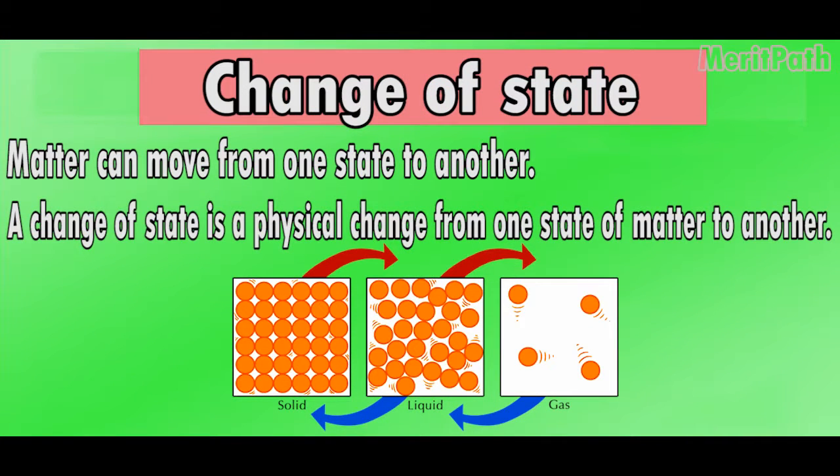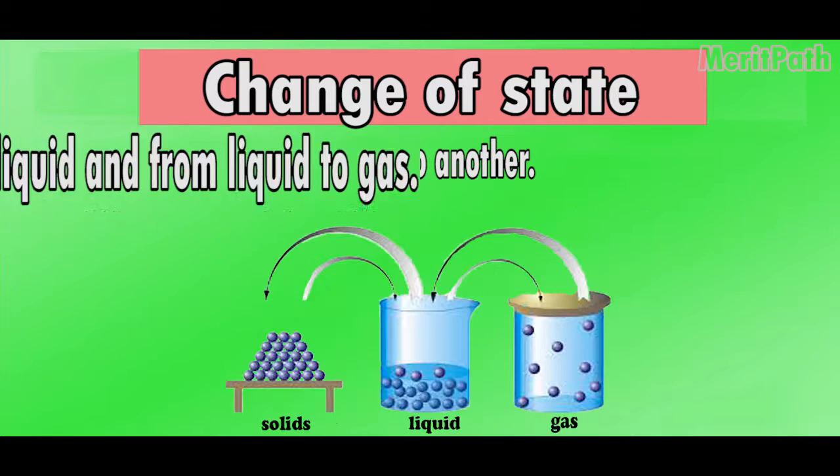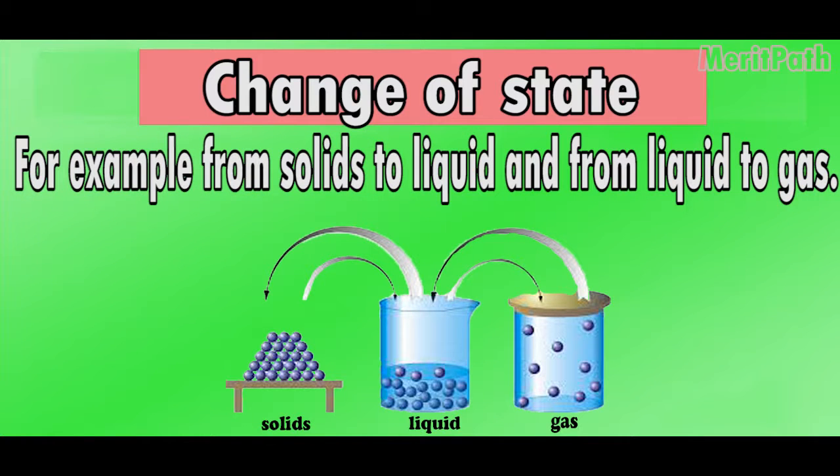Change of state. Matter can move from one state to another. A change of state is a physical change from one state of matter to another. For example, from solids to liquid and from liquid to gas.